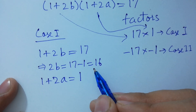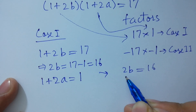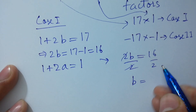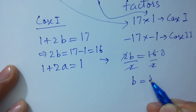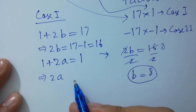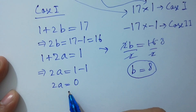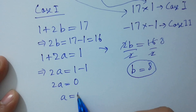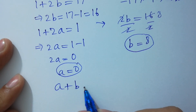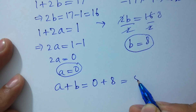Dividing both sides by 2, b equals 8. For a: 2a equals 1 minus 1, so 2a equals 0, giving a equals 0. Therefore a plus b equals 0 plus 8.